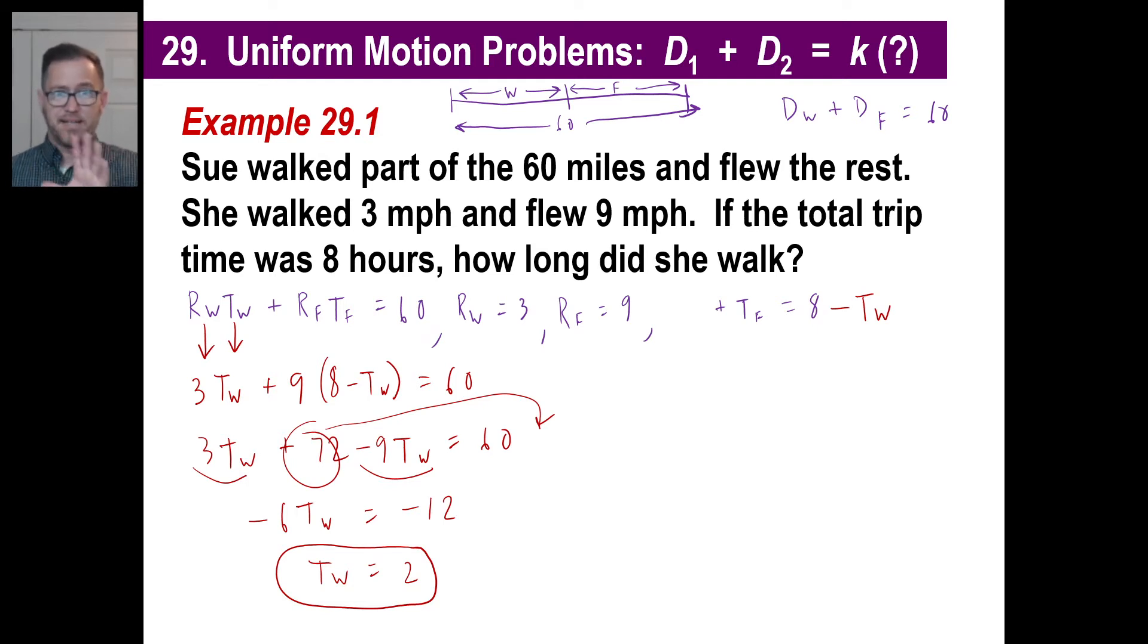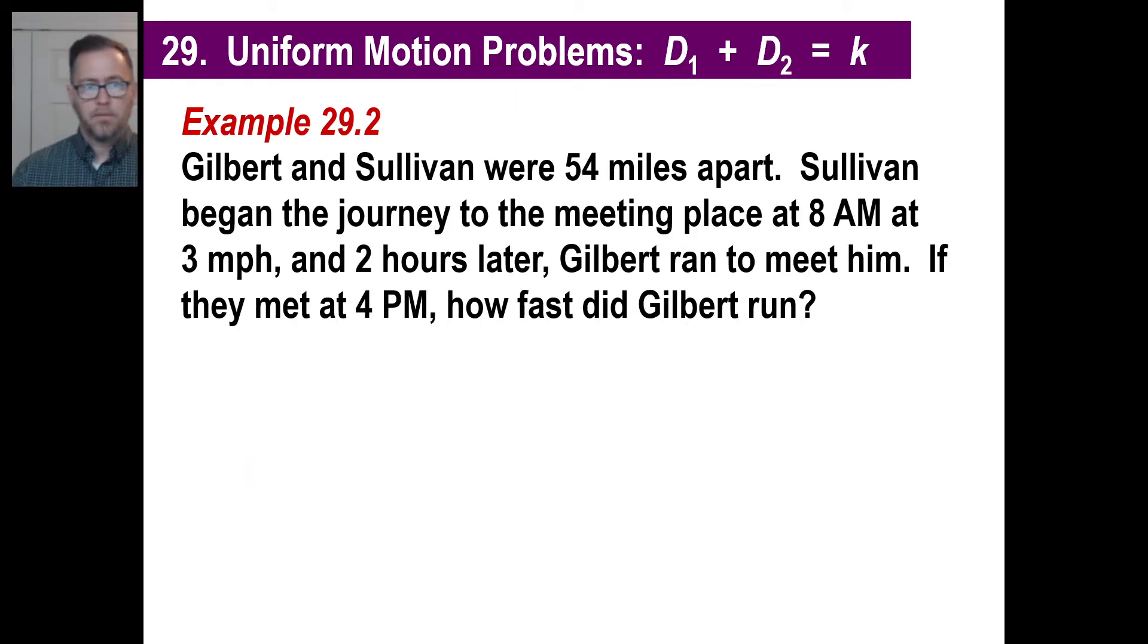Let's test it in 10 seconds. If she walks three miles per hour for two hours, that means she goes six miles walking. If she flies nine miles per hour, how long does she fly? She did eight hours total, she walked for two, so she had to fly six hours. Six hours she flew at nine miles per hour. Six times nine is 54. Add those two together, that gives you 60 miles. We got it.